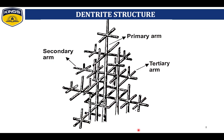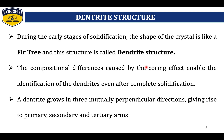A new structure called dendrite structure also appears. The dendrite has a primary axis, and next to the primary axis is the secondary axis or secondary arm, and similarly the tertiary arm. During the early stages of solidification, the shape of the crystal is like a fir tree — this is called a dendrite structure. The composition difference caused by the coring effect enables identification of the dendrites even after complete solidification. A dendrite grows in three mutually perpendicular directions, giving rise to primary, secondary, and tertiary arms.